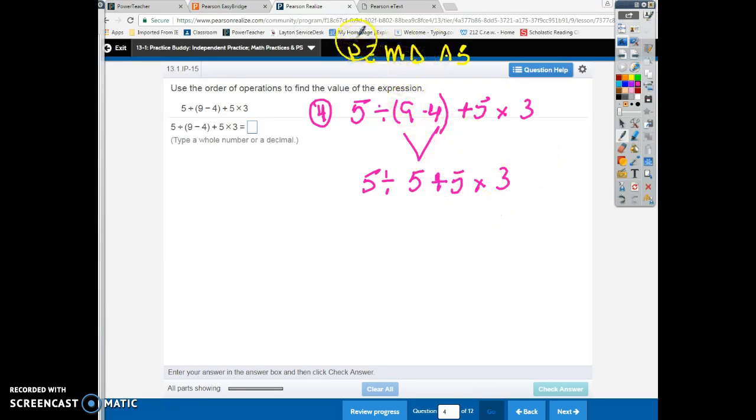Now, this is kind of the fun part. So we did our parentheses. We don't have any exponents. We're looking at multiplication and division left to right. Which one comes first? Well, in this problem, it's division. Division comes first. So we have to do this five divided by five first before we solve anything else. So we do five divided by five. That is one plus five times three.